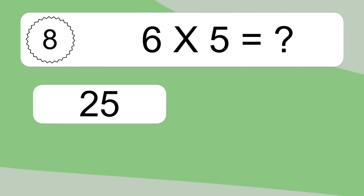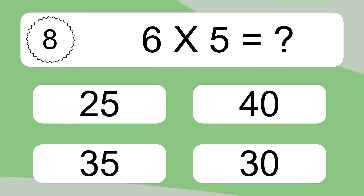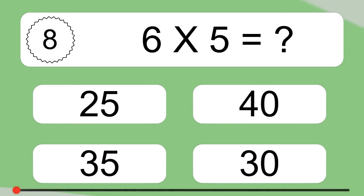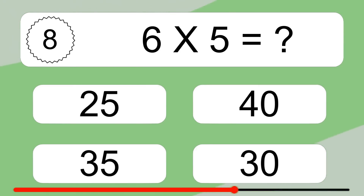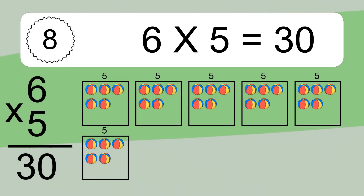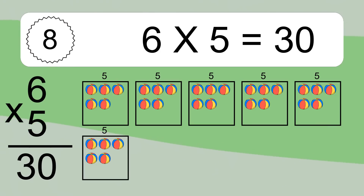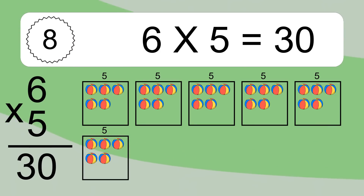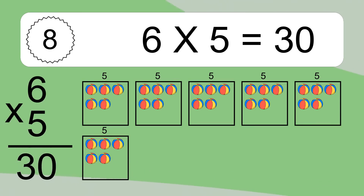6 times 5 equals what? 6 times 5 equals 30. We have 6 boxes and each box has 5 colorful balls inside. If you count all the balls in all the boxes together, you will have 6 times 5 balls. This equals 30 balls.